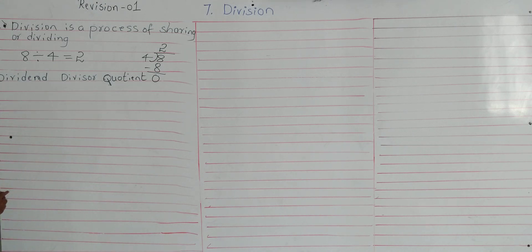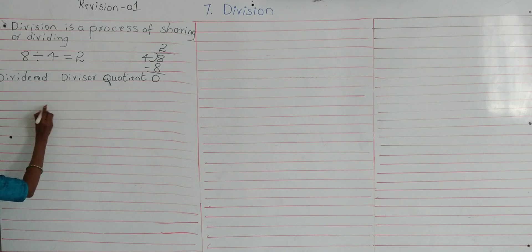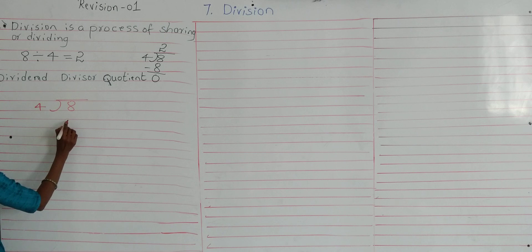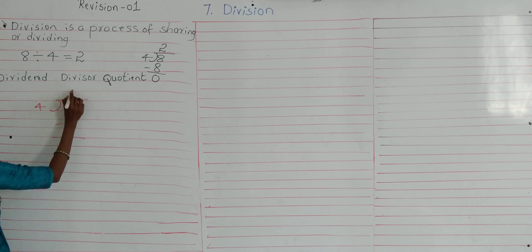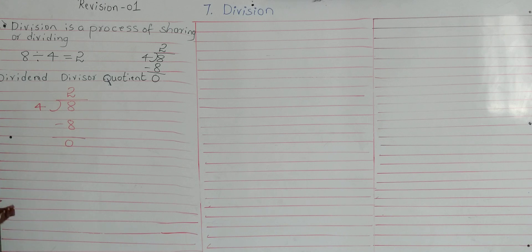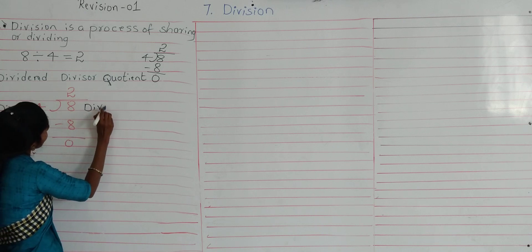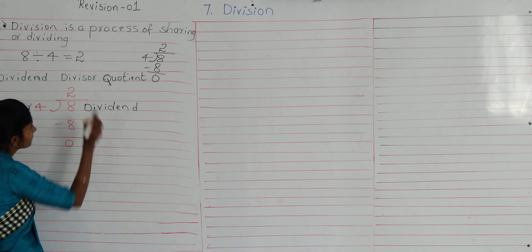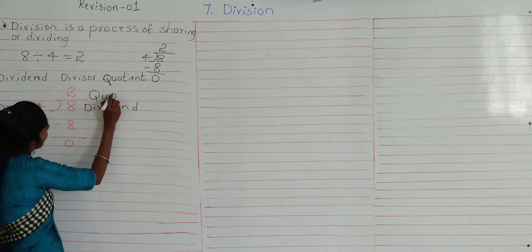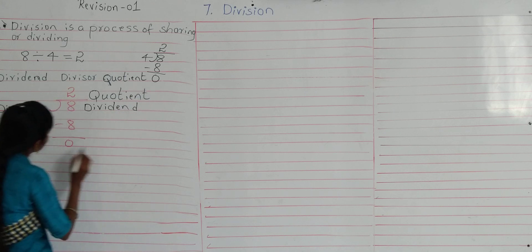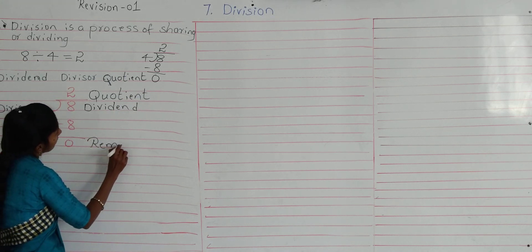After dividing, what remains is called the remainder. So we can write the division terms like this: here 4 is the divisor, 8 is the dividend, 2 is the quotient, and 0 is the remainder.